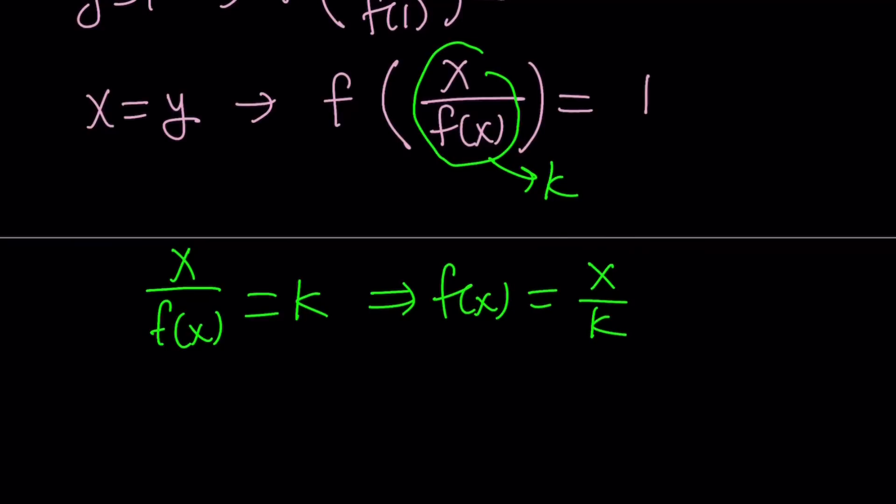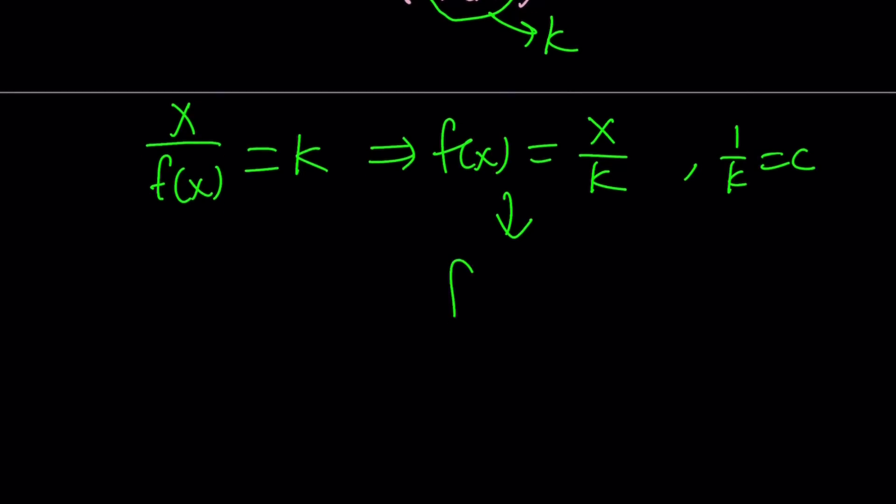But I don't like that. I just want to turn this into kind of like a more linear looking. How about setting 1 over k equal to c? And hopefully you see what I see. And you're going to get f of x equals cx. So that seems to be a possible solution. We can always test it out. We can just plug it in, right? Obviously.